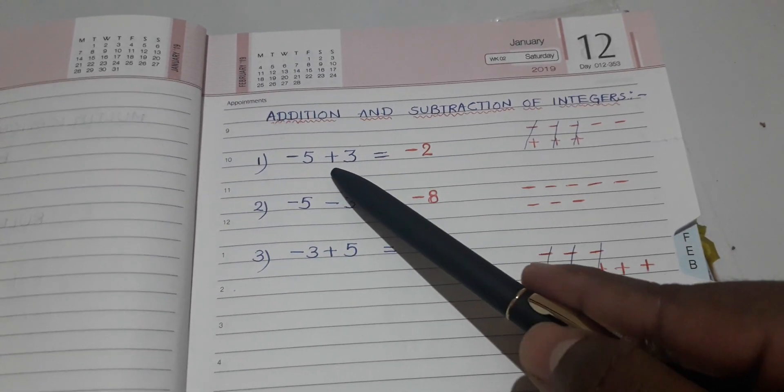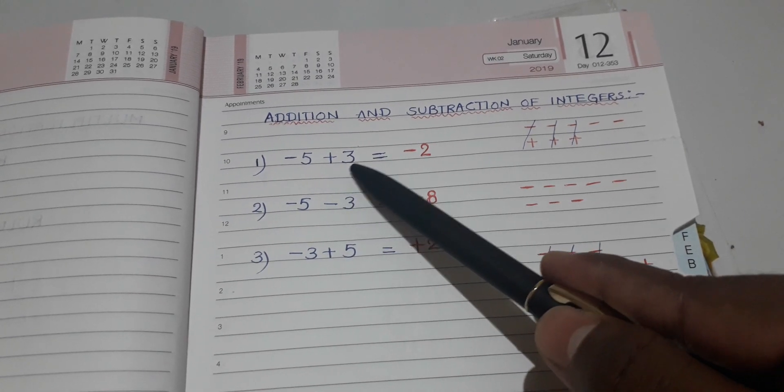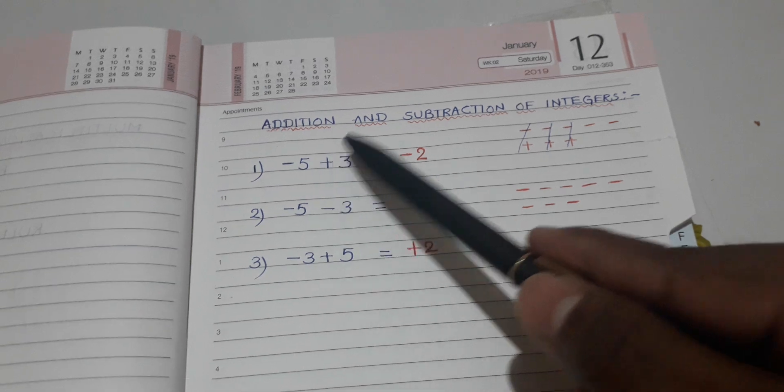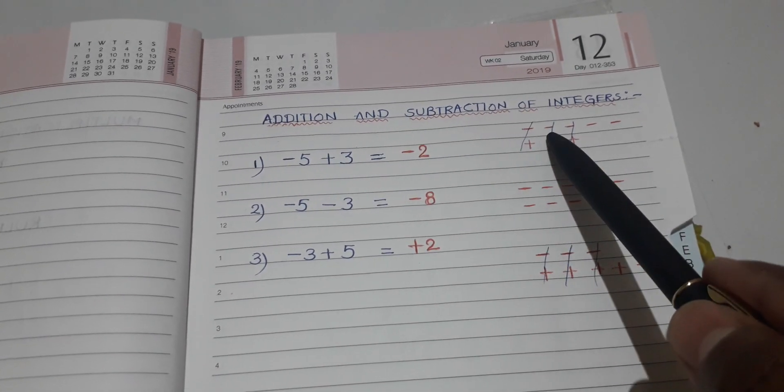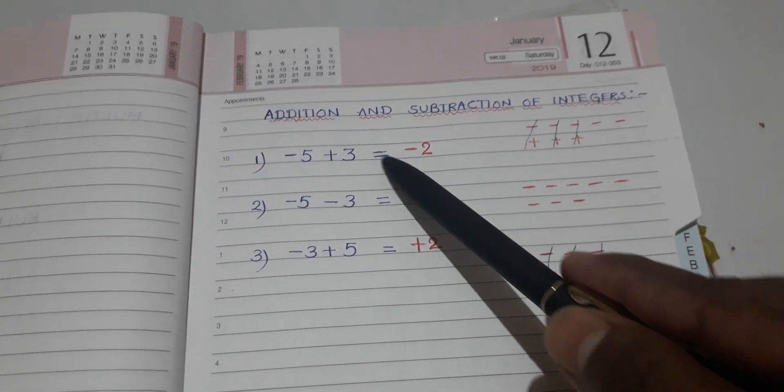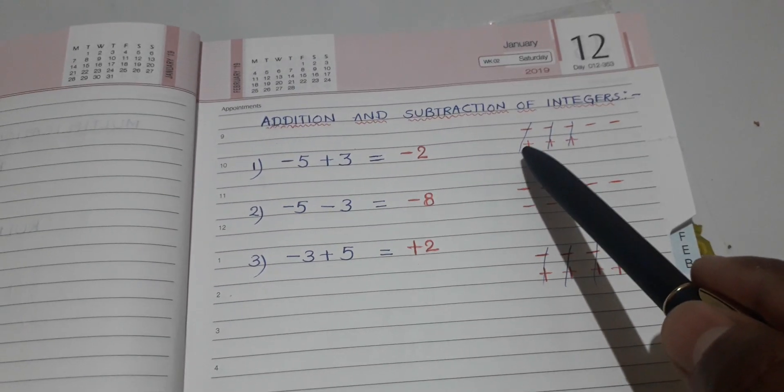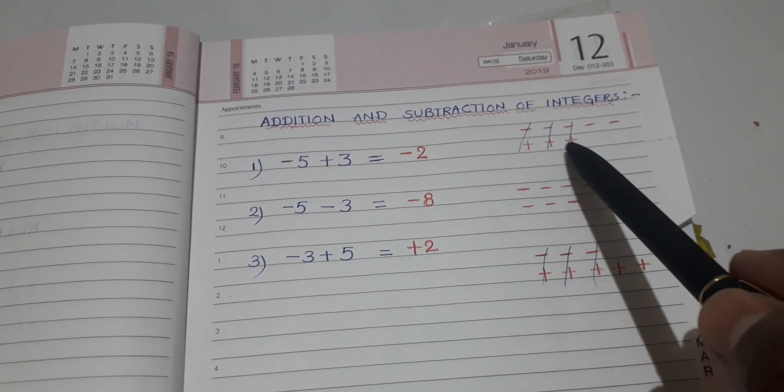The first question: minus 5 plus 3 equals what? This is minus 5, so you write 5 minus symbols. Then this is plus 3. You write 3 plus symbols below the minus symbols. 1, 2, 3.